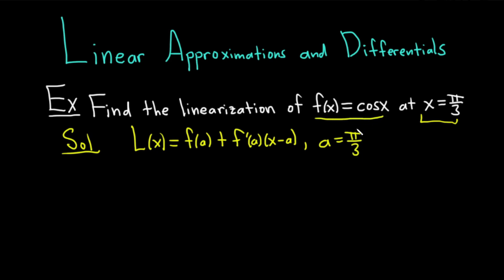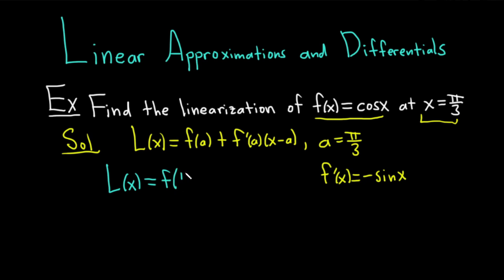And f of x is cosine x. We're going to need the derivative — f prime of x is negative sine x. Now we have everything for the formula, so we can plug it in. L of x equals f of pi over 3, plus f prime of pi over 3 times x minus pi over 3. By the way, this formula is basically the tangent line to the graph of the function at x equals a.